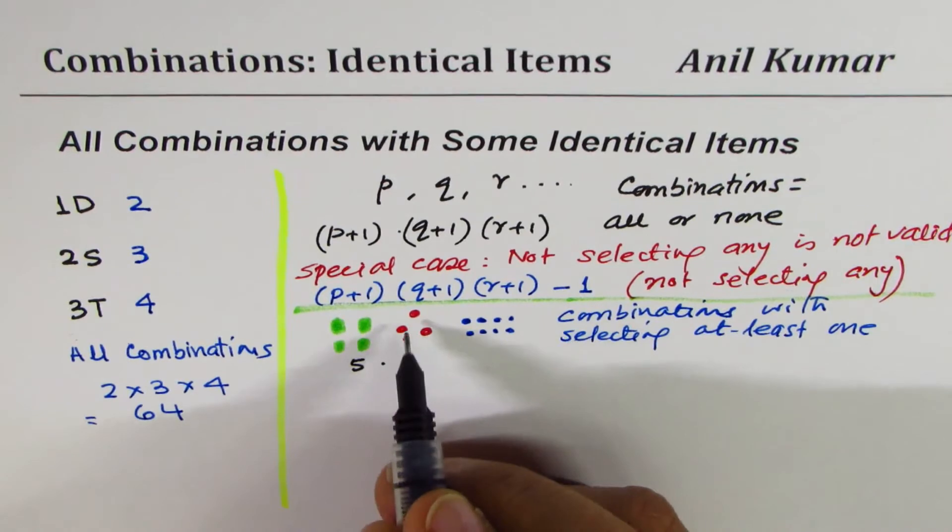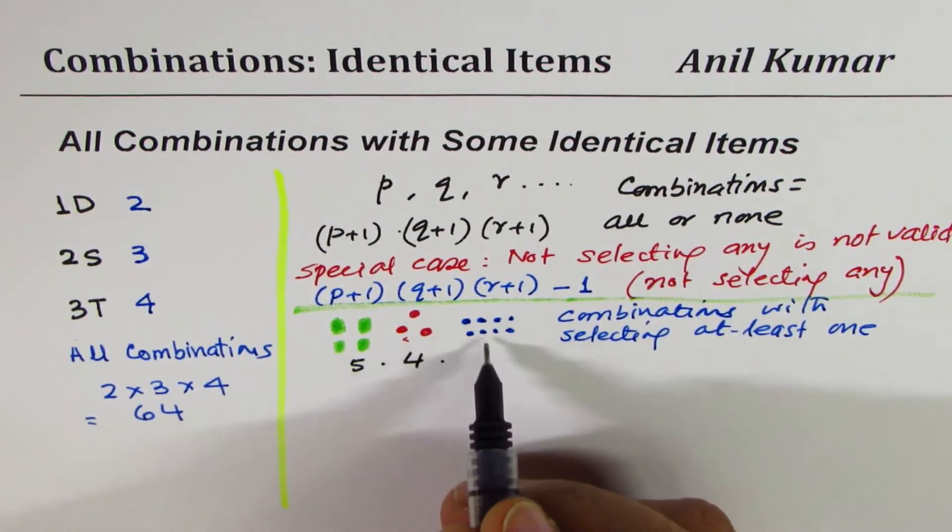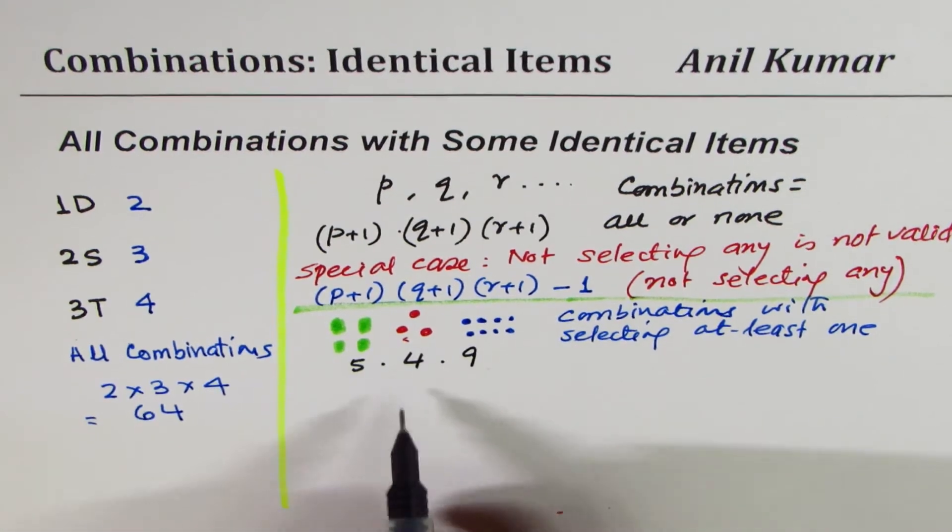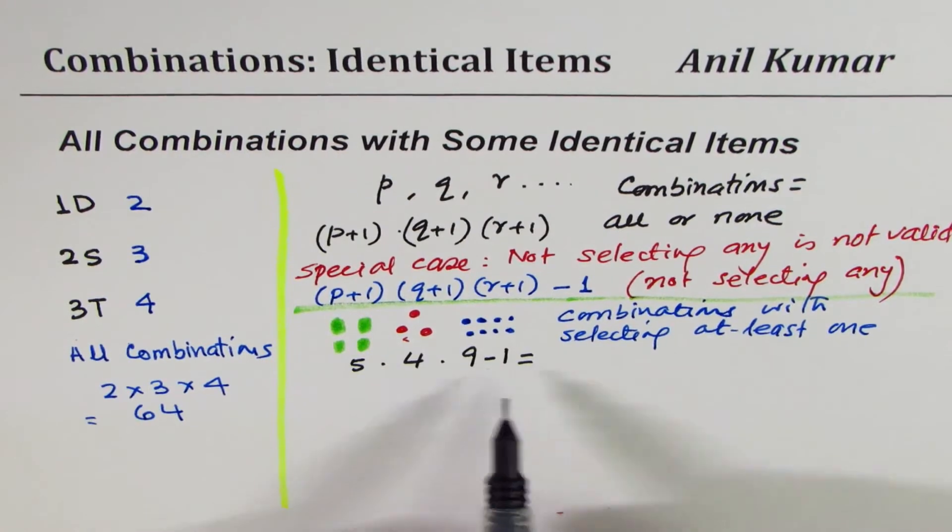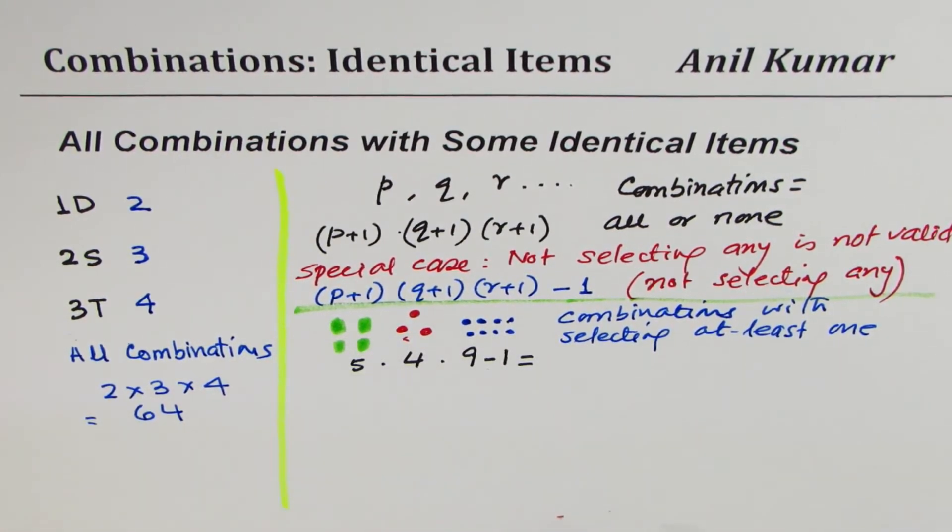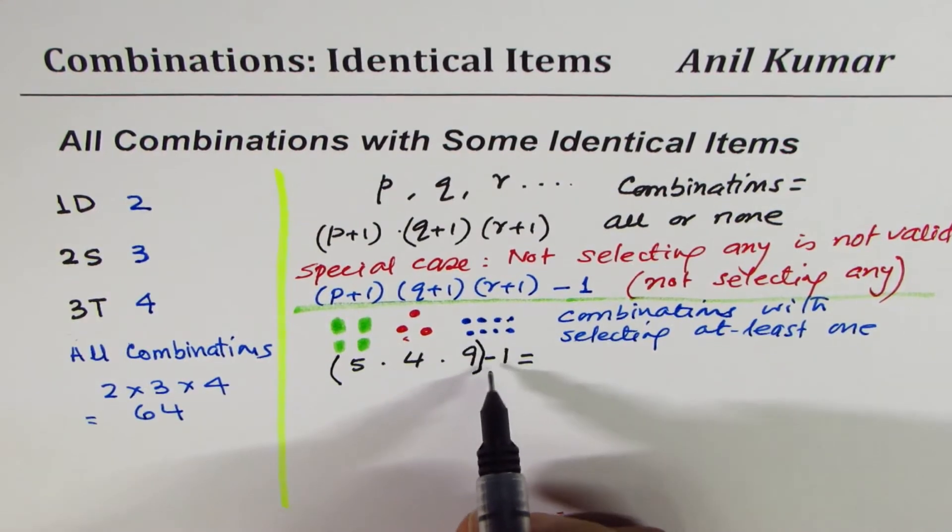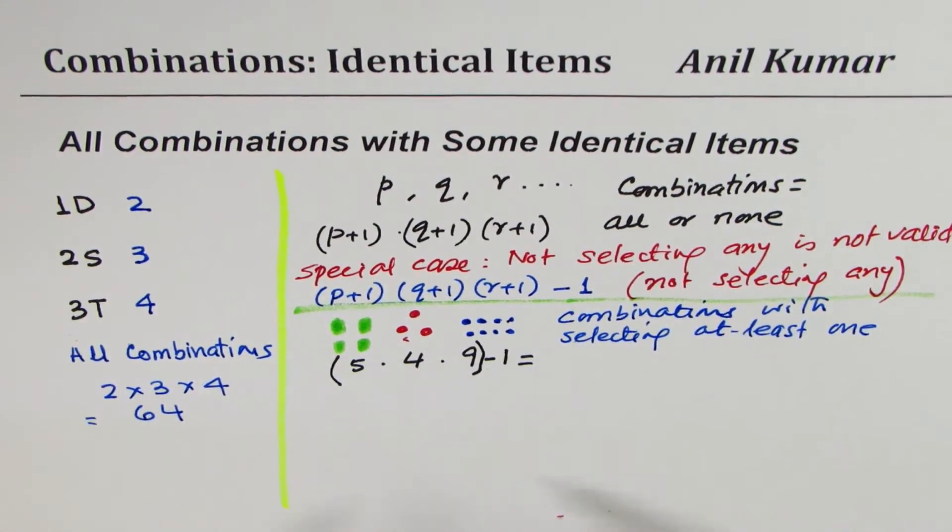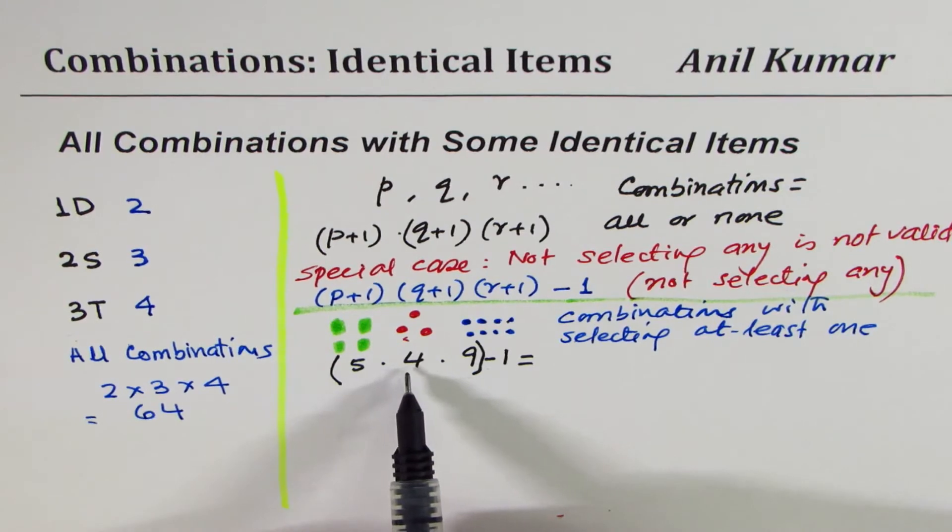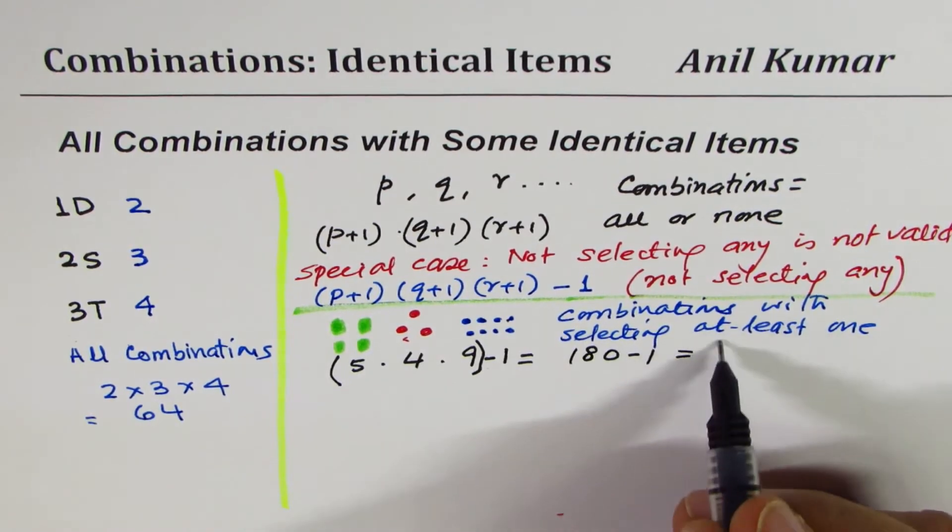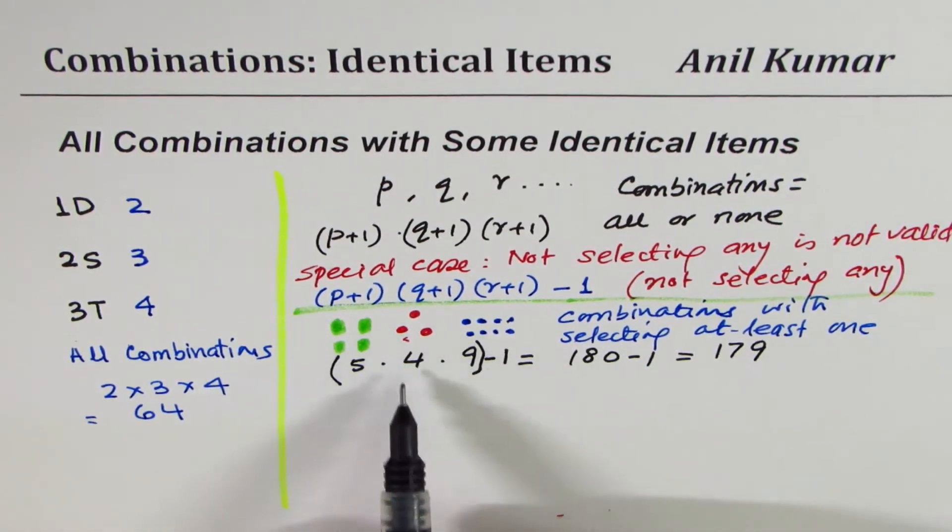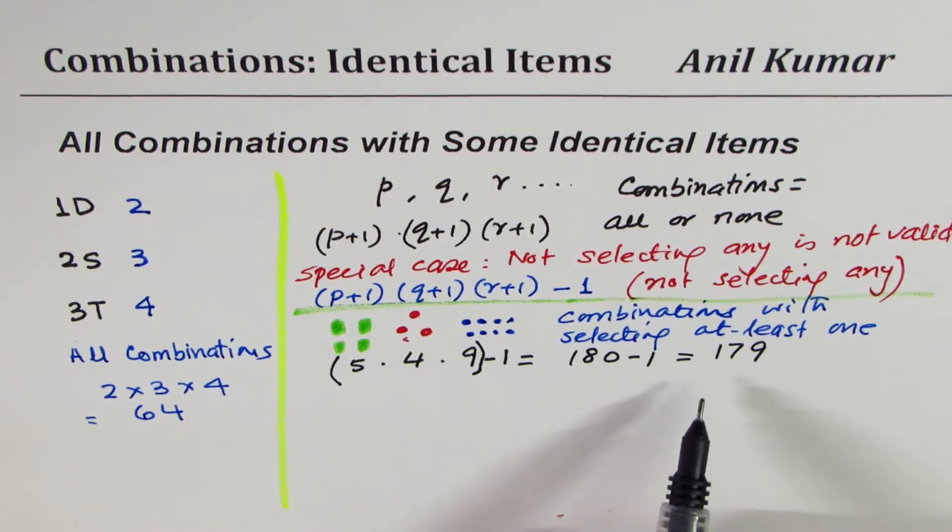In that case the answer will be these are four so we'll have four plus one that is five, times three plus one is four, times eight plus one is nine, minus one. We'll have to do this first and then take away one. So five times four is twenty, and twenty times nine, two times nine is eighteen, so we get one hundred and eighty minus one, we are left with one seventy nine. So here the answer should be one seventy nine because not selecting is not a choice.